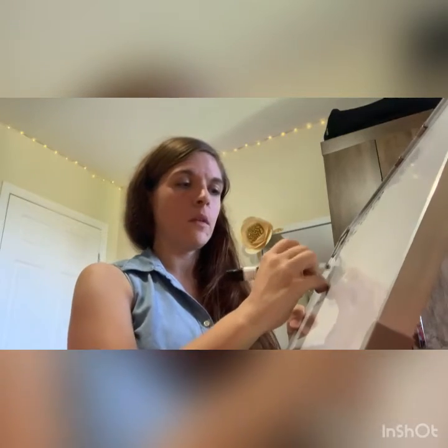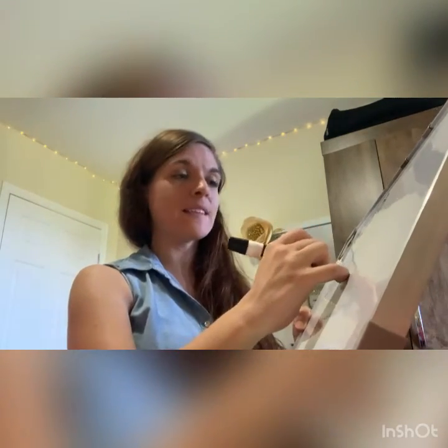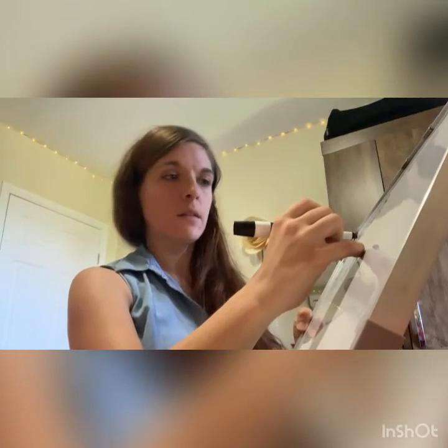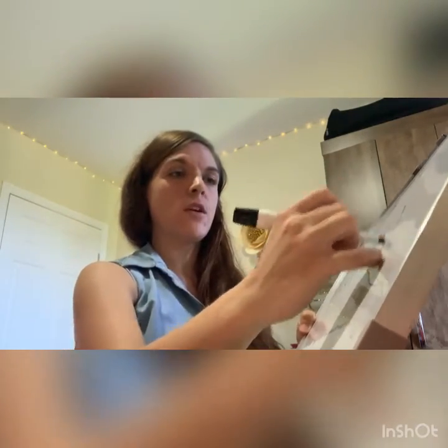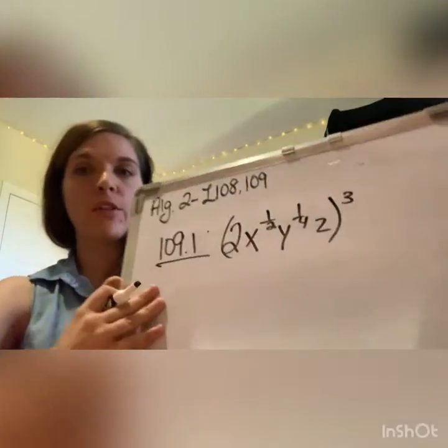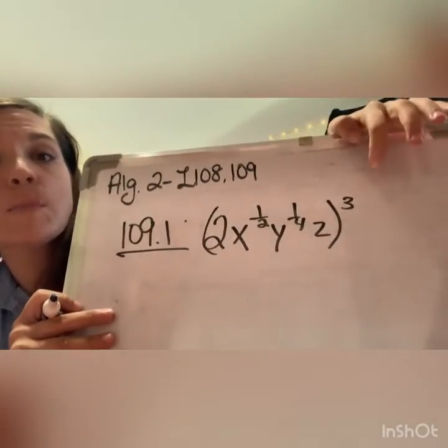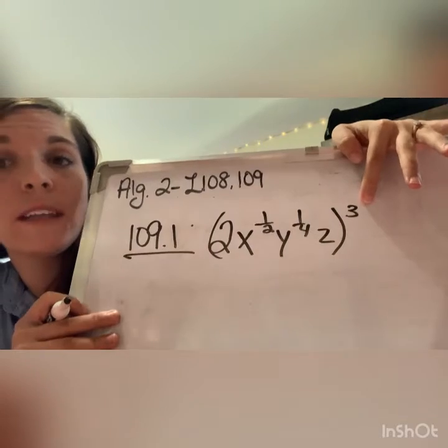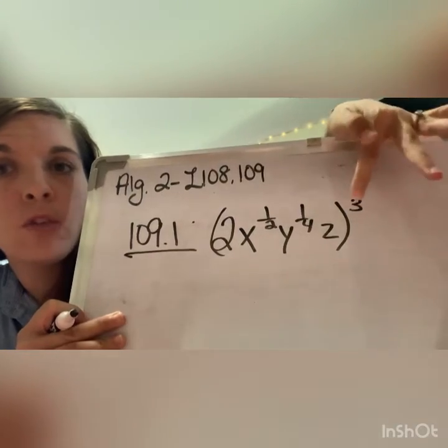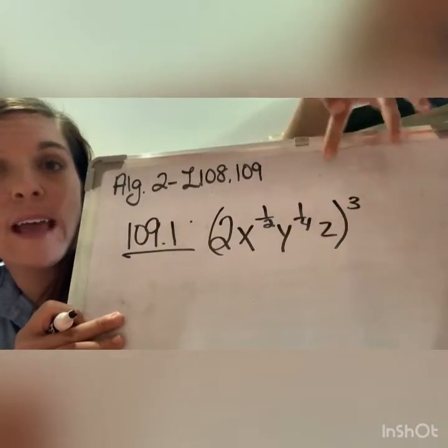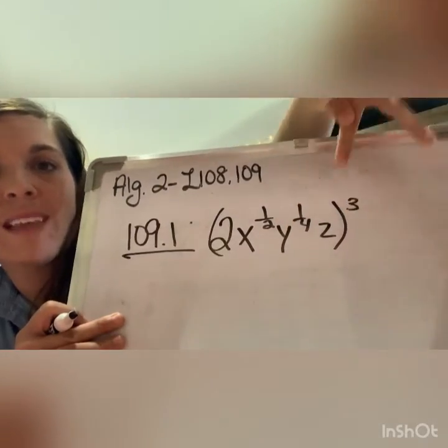Lesson 109 is pretty simple as well, which is why I put these two together. They say we're supposed to expand this — they're just trying to scare you with these fractional exponents. When you expand, you just need to remember your exponent rule: when the exponent is outside, you multiply the exponents inside. So it's going to be two to the third, x to the one half times three, y to the one fourth times three.